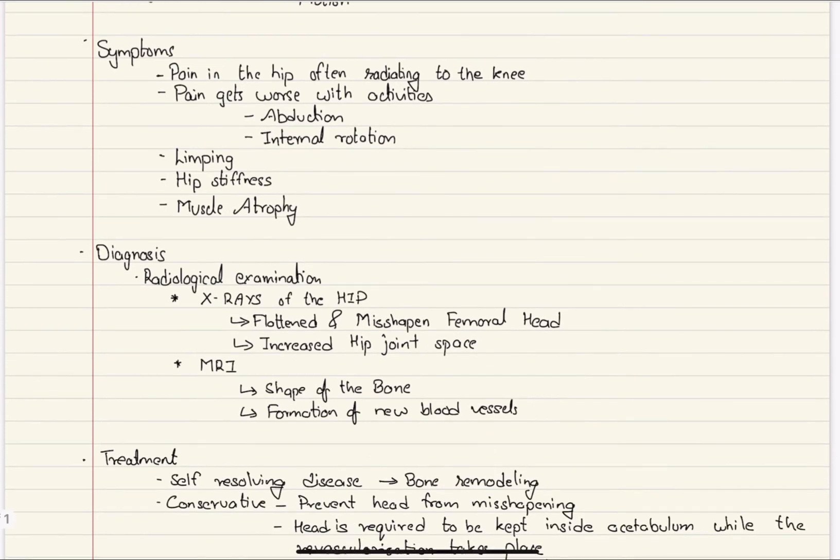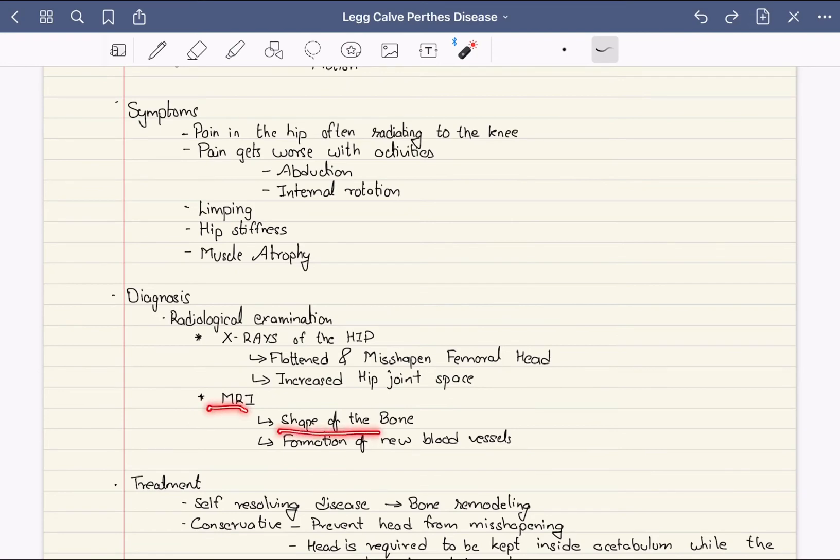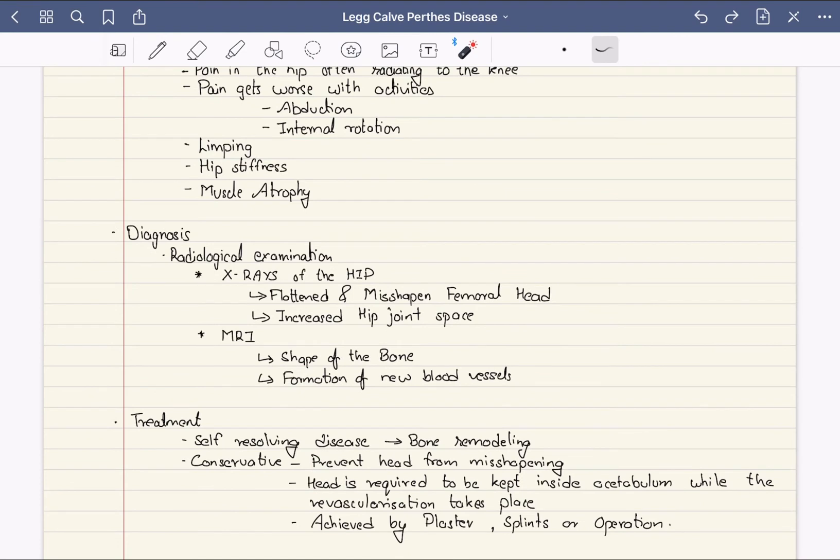Diagnosis of Perthes disease is usually done through radiological examination. X-rays of the hip reveal a flattened and misshapen femoral head, with increased hip joint space due to loss of mass. MRI is done to reveal the shape of the bone and formation of new blood vessels.